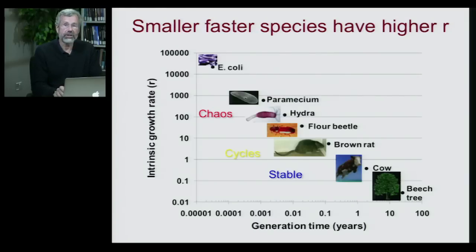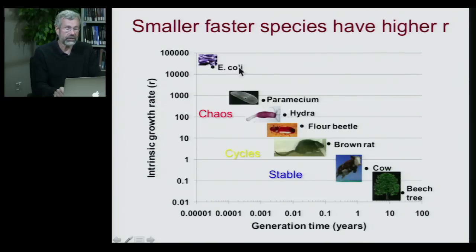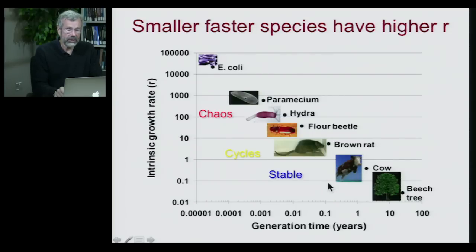Some species have much higher intrinsic growth rates than others, and this is largely explained by their size. Very large organisms have very slow generation times — beech trees take decades to mature, cows mature in years, rats in months, beetles in days, and so on down to organisms that reproduce in hours. Smaller things tend to have much higher intrinsic growth rates, and these are the organisms we associate with chaotic population changes — E. coli, protozoa like paramecium. Rats and gypsy moths show cycles, while larger organisms more smoothly approach their carrying capacity.